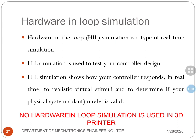Hardware-in-loop simulation is not used because it is not a parallel process. Hardware-in-loop simulation is a type of real-time simulation used to test your controller or tune your controller. This simulation shows how your controller responds in real time. As far as these 3D printers are considered, we are not in need to test our controller because the only thing the controller does is maintain the sequence. As we have seen in the control algorithm, it has to maintain the control algorithm.